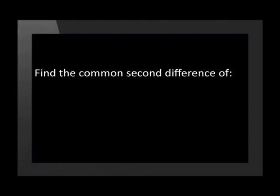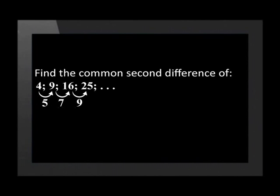Let's look at an example. Find the common second difference of the quadratic sequence 4, 9, 16, 25. First we need to work out the first differences between the terms — these are 5, 7, and 9. Now we work out the second difference between these terms and get a constant second difference of 2.